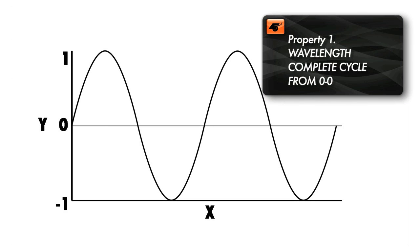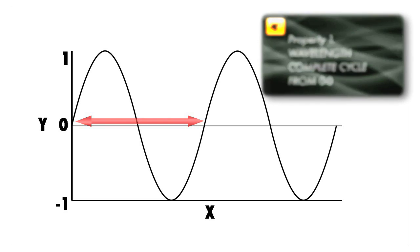We can divide the key components of a sound wave into three sections. The first is the wavelength. This means the distance between the start and end of one whole wave. In other words, a complete cycle from zero to zero on our X-Y graph.